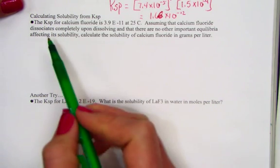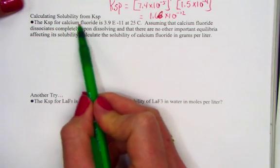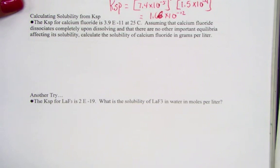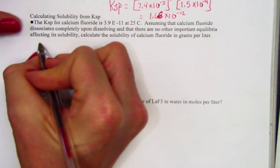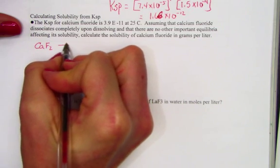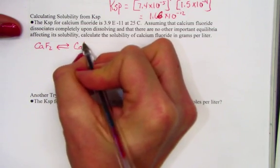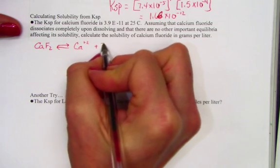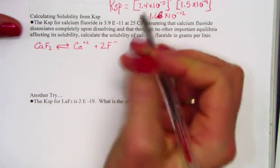So let's take a peek here. We have a Ksp for calcium fluoride is 3.9 times 10 to the negative 11th at 25 degrees. I'll just reread that first sentence. Calcium fluoride CaF2 based on charge is in dynamic equilibrium with its ions Ca²⁺ and 2 fluoride ions.